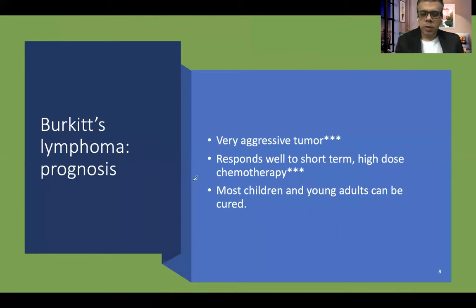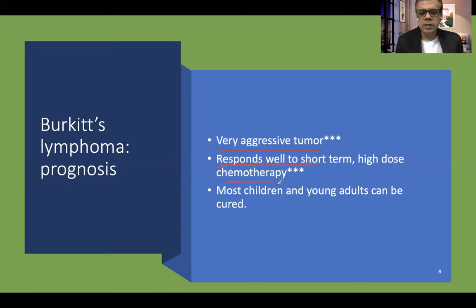Burkitt lymphoma is a very aggressive disease that spreads rapidly. It commonly transforms into leukemia and can spread to other organs including the CNS. However, if diagnosed early and chemotherapy is instituted at an early stage, it carries a very good prognosis and many children and young adults can be cured. If treated in later stages, the outcome is very poor.